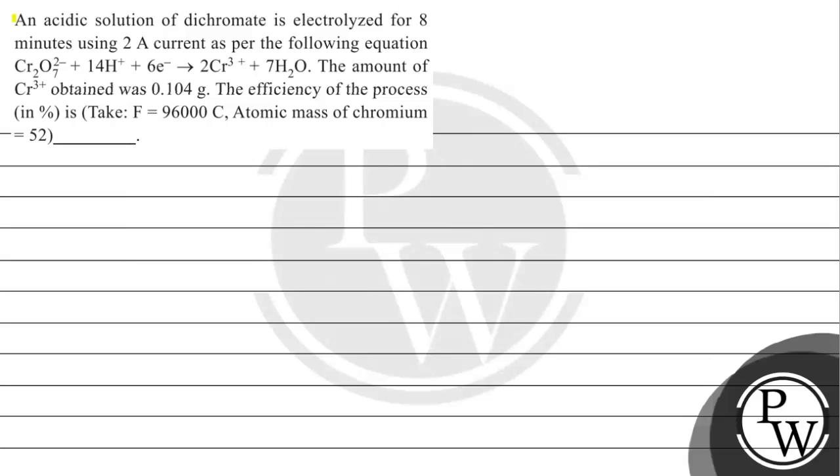Hello, let's read this question: an acidic solution of dichromate is electrolyzed for 8 minutes using 2 ampere current as per the following equation. The amount of Cr³⁺ obtained was 0.104 gram. The efficiency of the process in percentage is - take F = 96000 C, atomic mass of chromium is 52. Basically in this question we need to find the efficiency of the process in percentage.